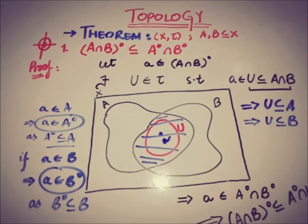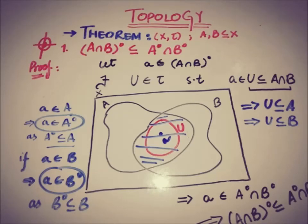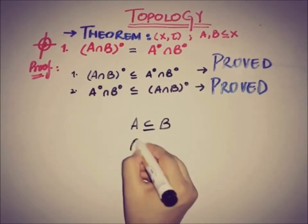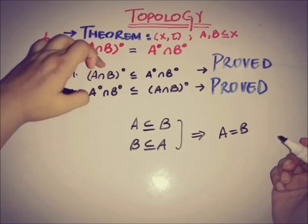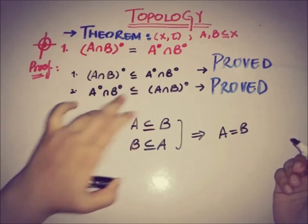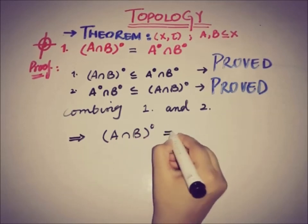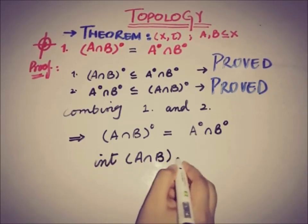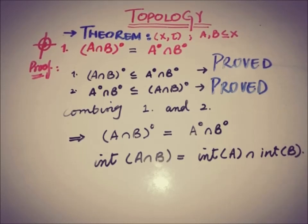We have proved both parts: Int(A) ∩ Int(B) ⊆ Int(A ∩ B) and Int(A ∩ B) ⊆ Int(A) ∩ Int(B). Since C ⊆ D and D ⊆ C implies C = D, we conclude that Int(A ∩ B) = Int(A) ∩ Int(B), which can also be written as interior of A intersection B equals interior of A intersection interior of B. The theorem is proved.